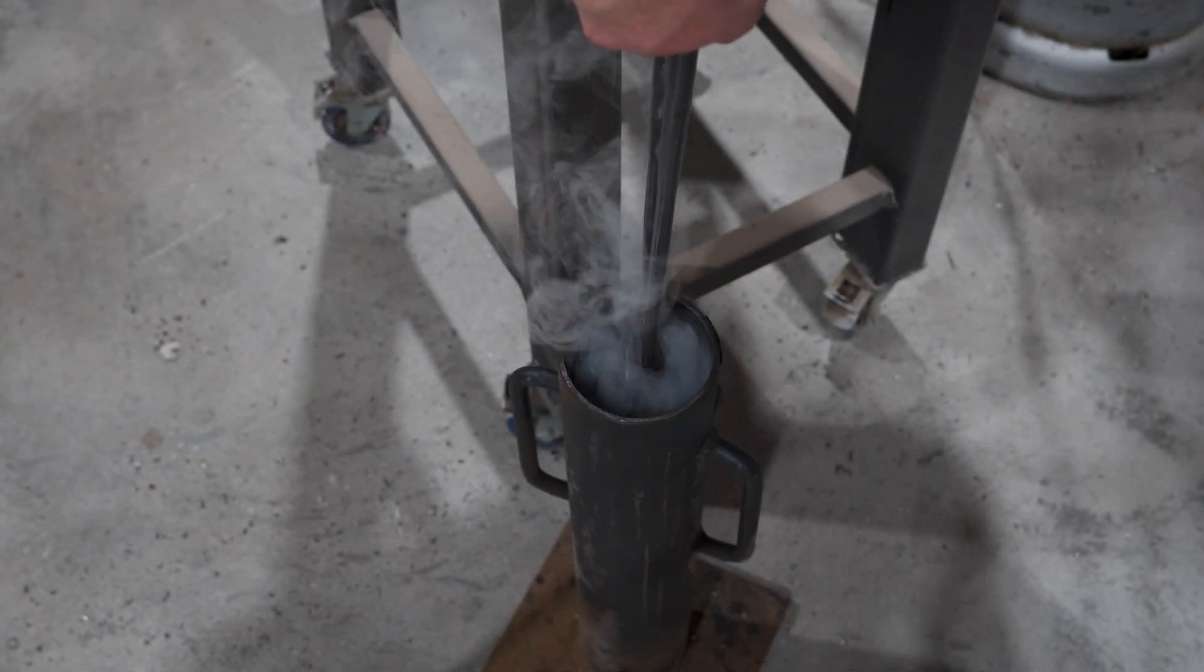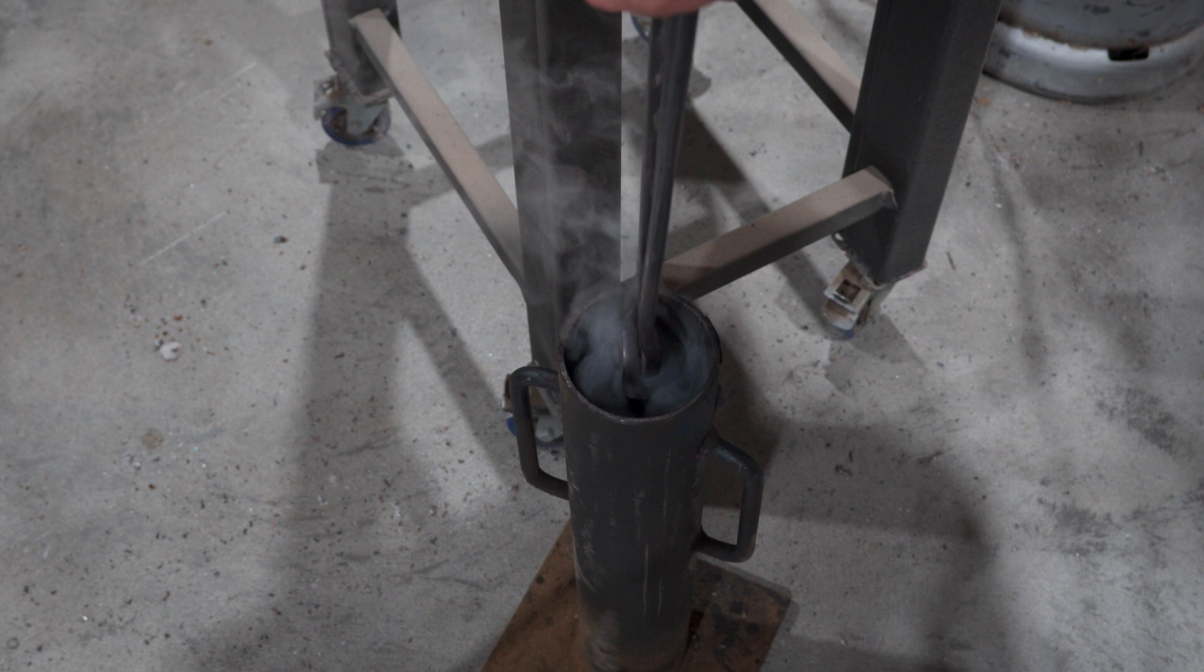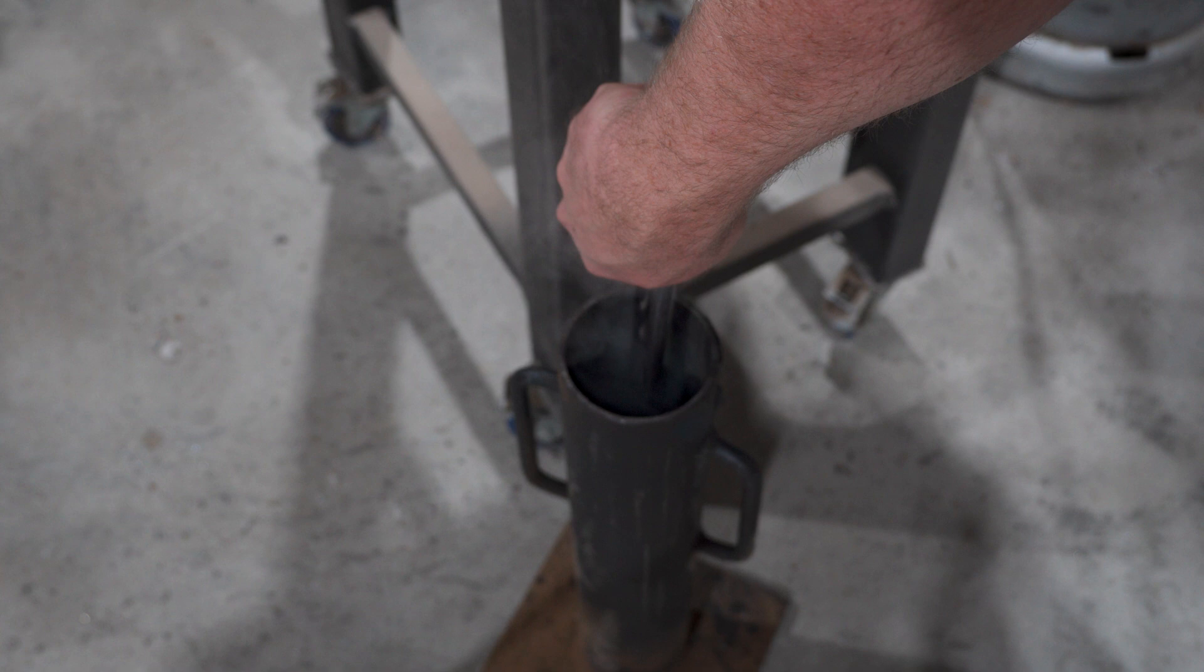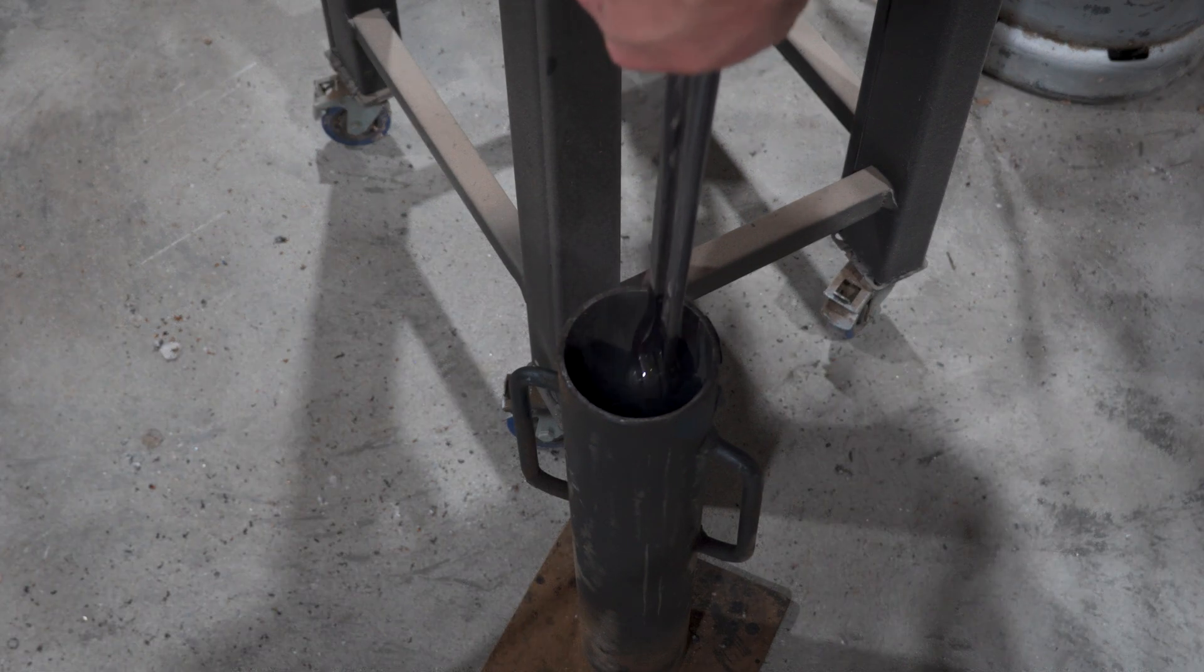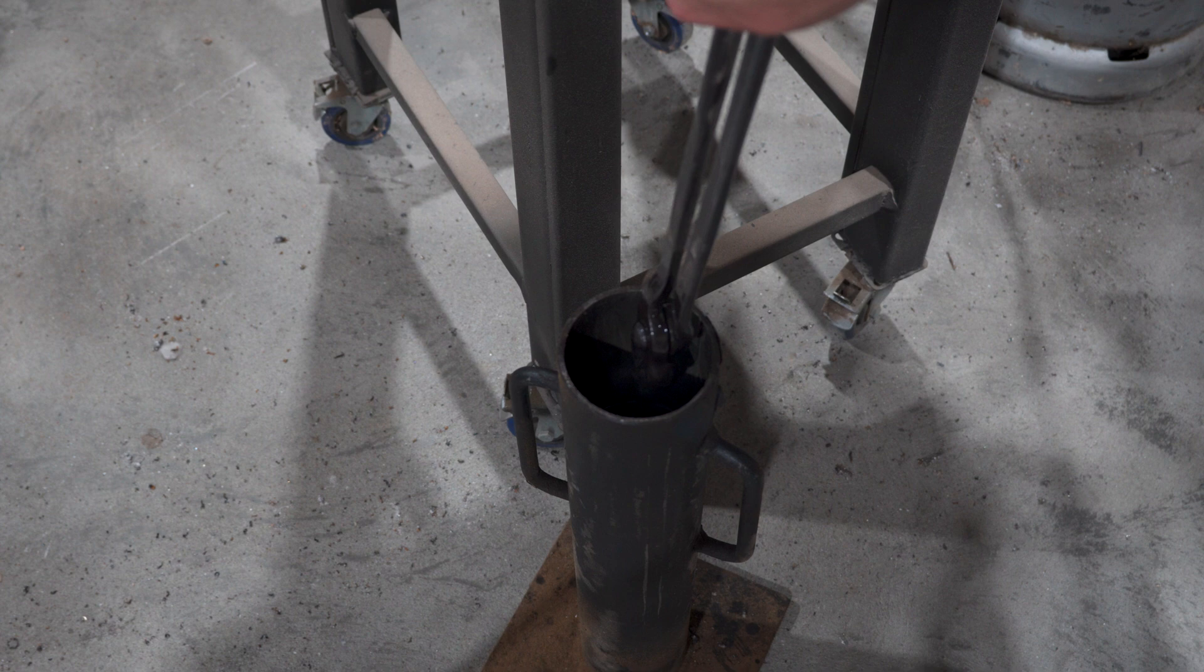When you get to temp, into your quenching medium it goes. Now something I do see people do a lot is swirl the part around. And personally, it freaks me out a bit. The sideways movement can increase your chances of warping your part. So just move it straight up and down to break all the bubbles and keep your quenching medium in contact with the part.